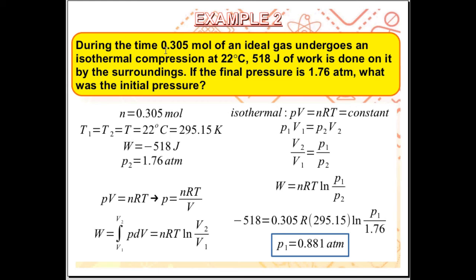During the time 0.305 mol of an ideal gas undergoes an isothermal compression at 22 degree Celsius. 518 joules of work is done on it by the surroundings. During the time that the gas undergoes isothermal compression, 518 joules of work is done on the gas by the surroundings. If the final pressure is 1.76 atm, what is the initial pressure?